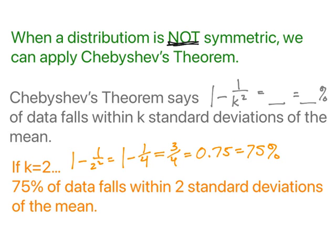If we have a symmetric distribution, then we use the empirical rule or other normal distribution pieces. But not symmetric, we have some issues. Chebyshev's theorem says that 1 minus 1 over k squared gives us a value which we can turn into a percent, and that's the percentage of data that falls within k standard deviations of the mean.